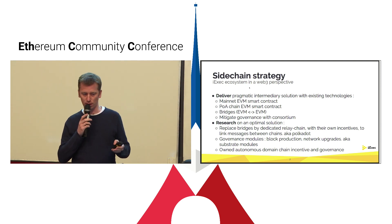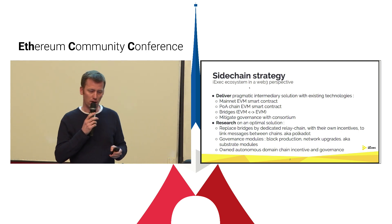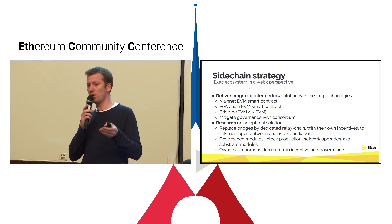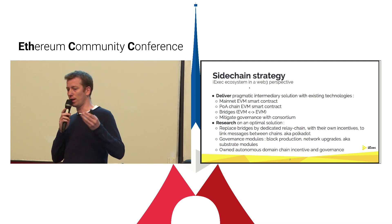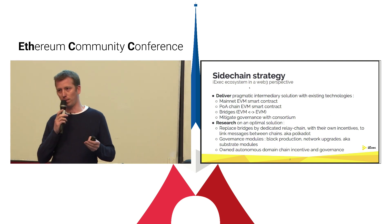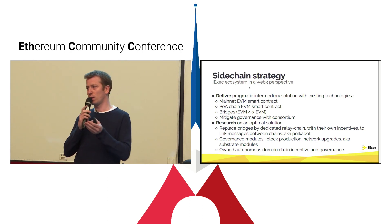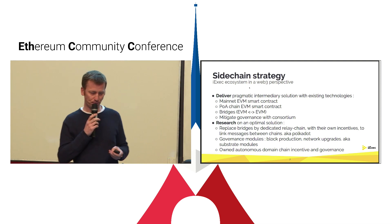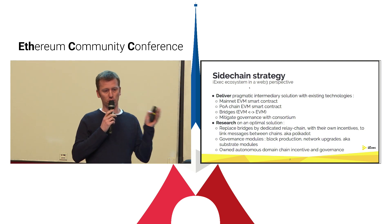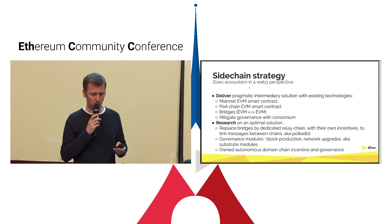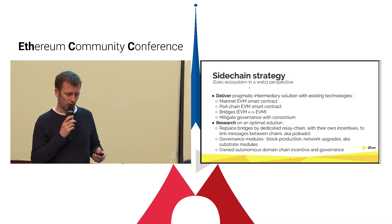In parallel, we have research where we experiment with substrate and the Polkadot ecosystem. The idea is that instead of using bridges under proof of authority, we can delegate this relaying and messaging between chains to Polkadot, which has its own incentive to do this relay. We also need governance modules as presented previously. Our ultimate goal is to have an autonomous chain with incentives and a governance layer — this is all currently in research.